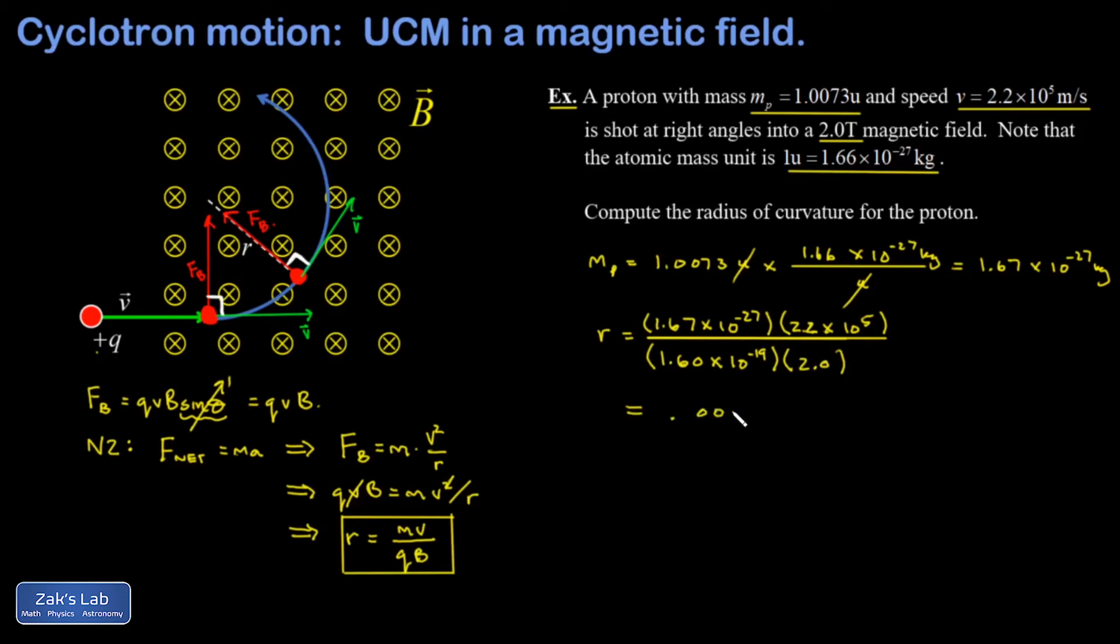And I get 0.0011, just keeping two sig figs here, meters. And I could write that as 1.1 millimeters radius of curvature.